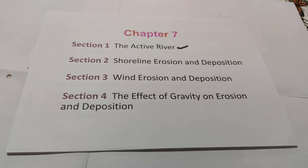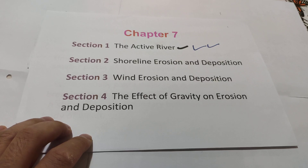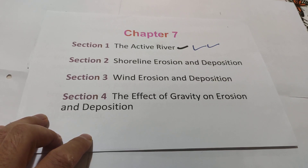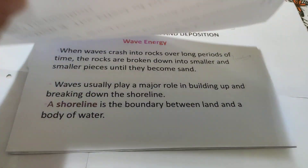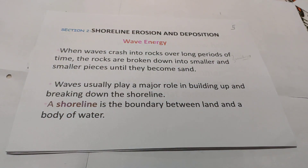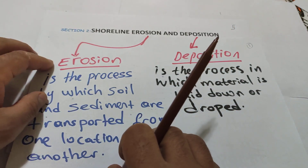Hello students, we are on Chapter 7: Agents of Erosion and Deposition. As you know, there are four sections. We have already finished section one on active rivers. Today we are going to study section two: Shoreline Erosion and Deposition. First, we need to know the meaning of erosion and deposition.